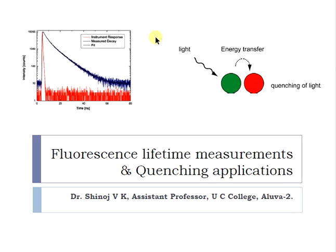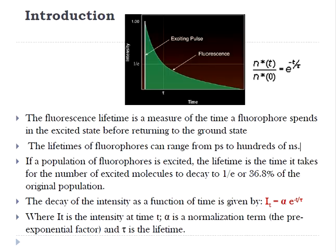When a molecule absorbs light, electrons in its constituent atoms become excited and are promoted to higher energy levels. When electrons in these excited states lose energy and return to the ground states, they release this energy in the form of heat or radiation. The light emitted during this process is known as fluorescence, and the molecules that show this activity are called fluorophores. The fluorescence lifetime is the measure of the time a fluorophore spends in the excited state before returning to the ground state by emitting a photon.